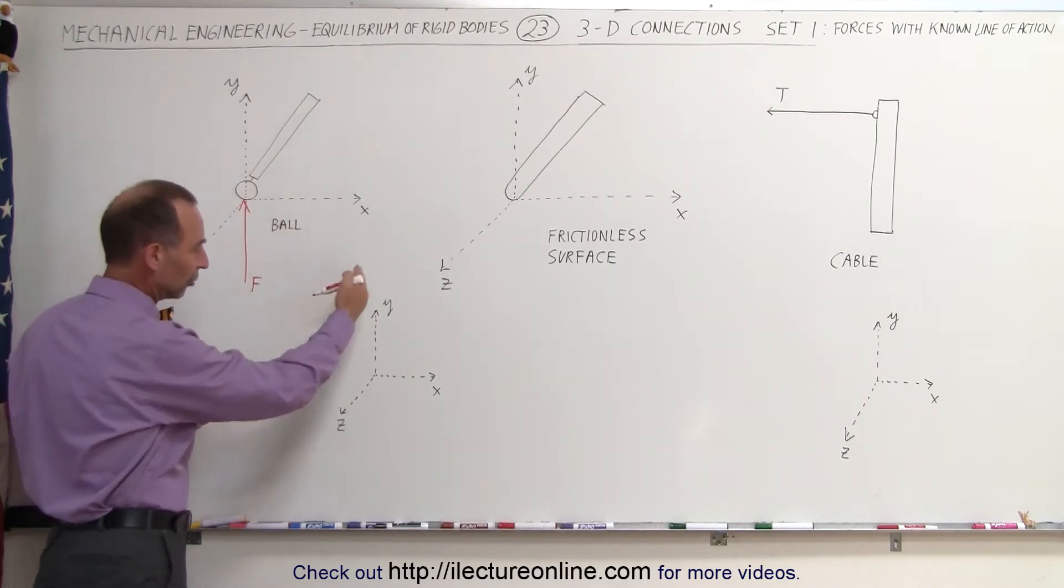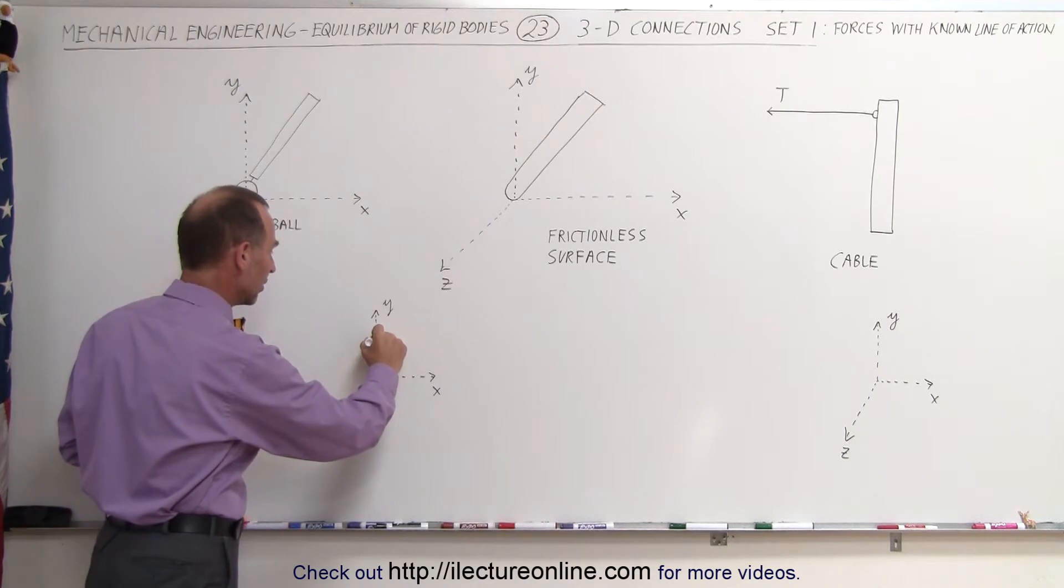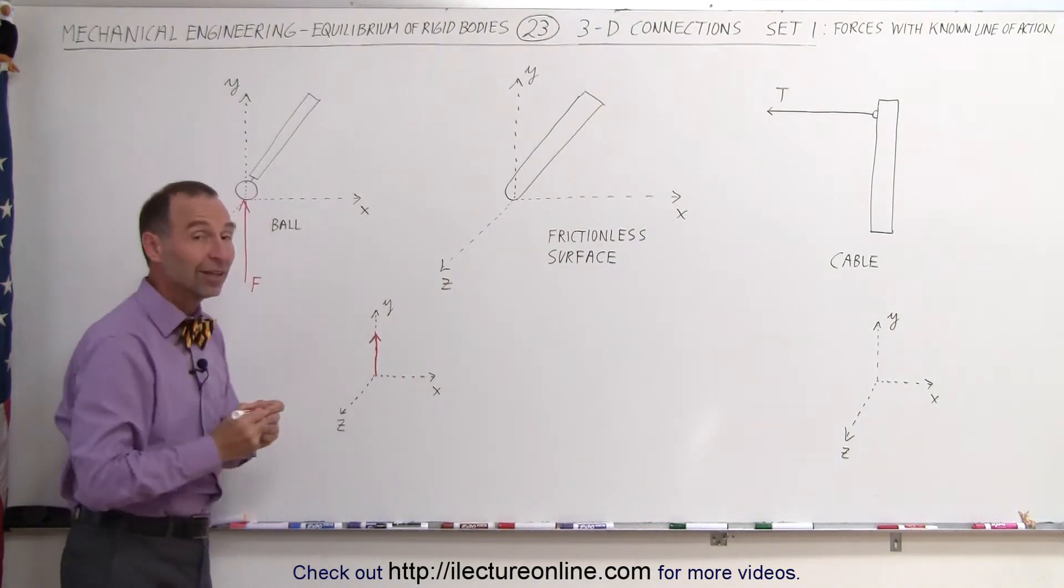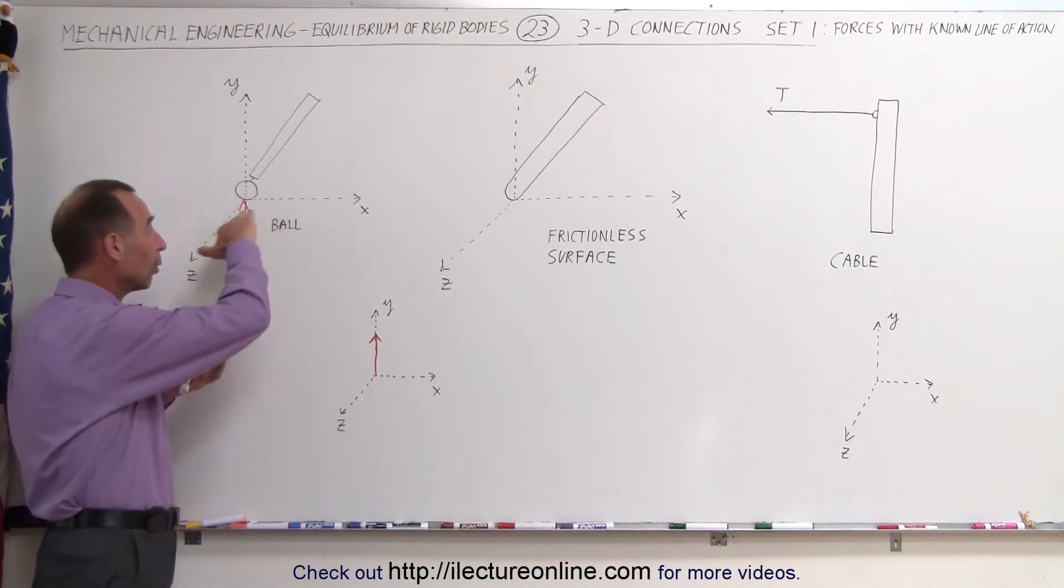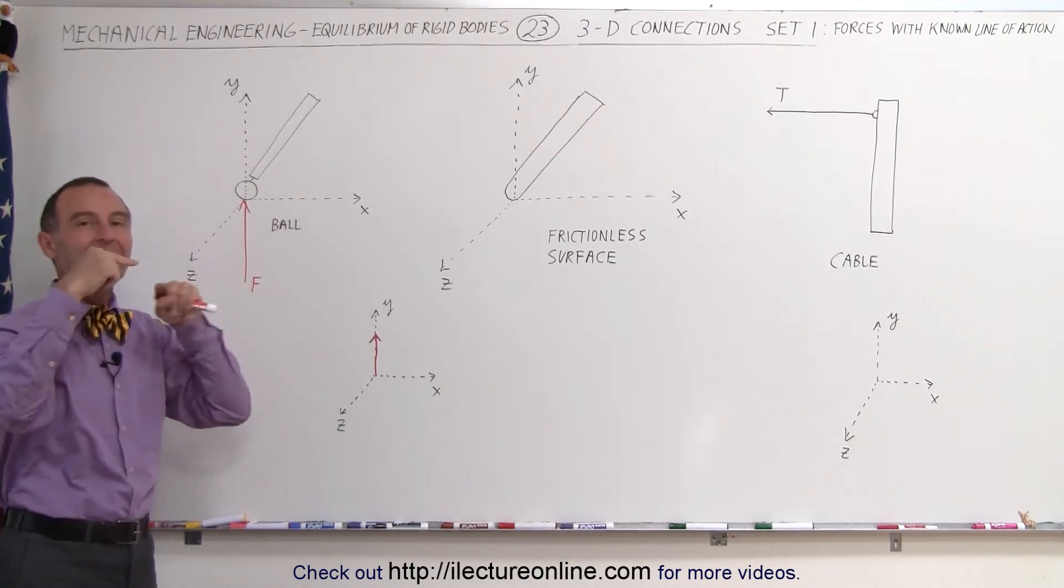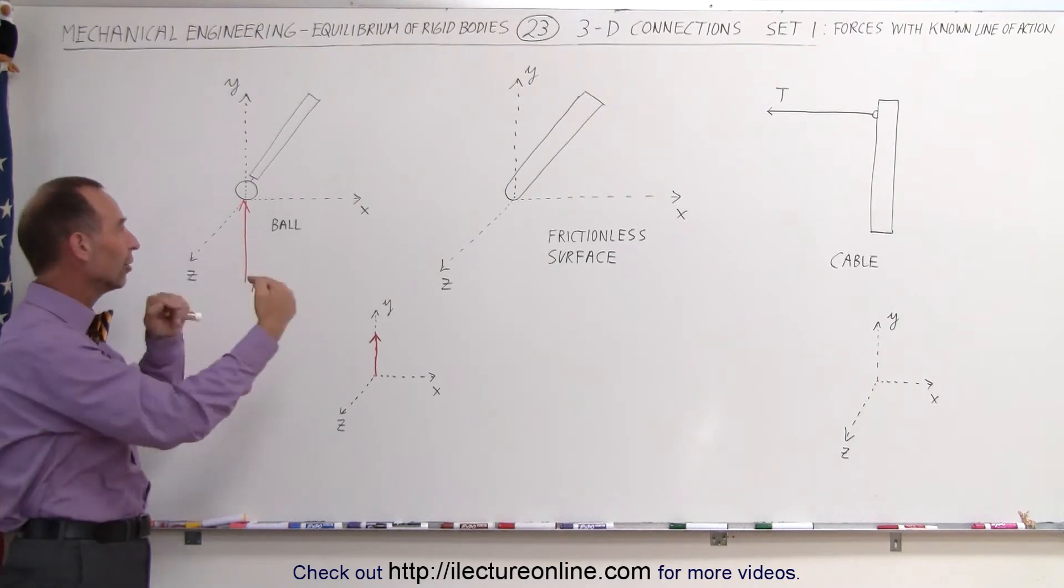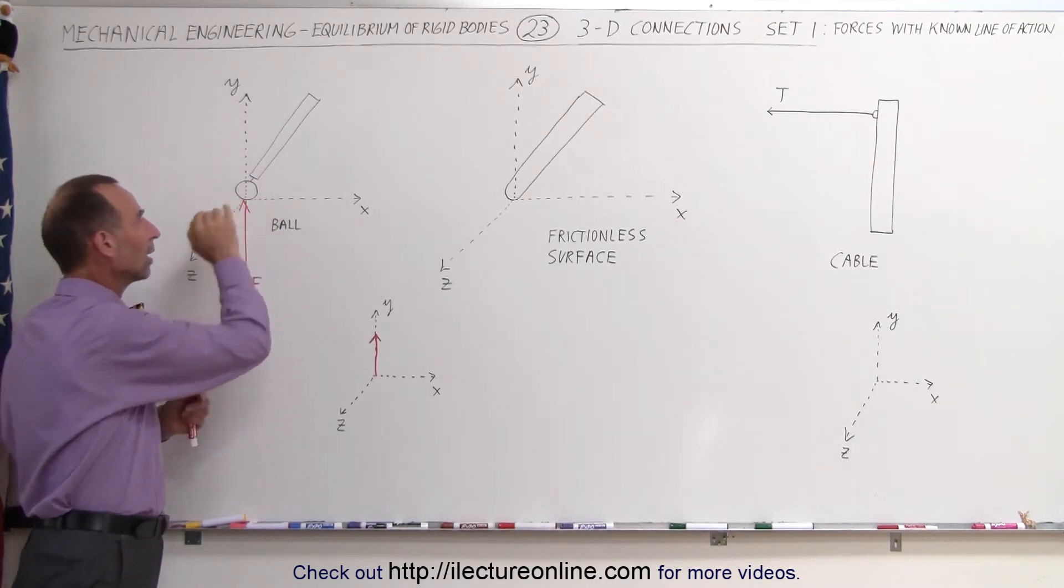And so as you look at the XYZ coordinate system here, you can then imagine there's just a single force pointing upward. The reason is, since there's relatively no friction on a ball like that and it can roll in any different direction, there cannot be any forces in the horizontal direction on the floor relative to the ball.